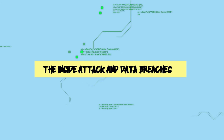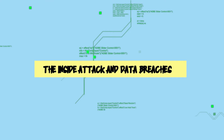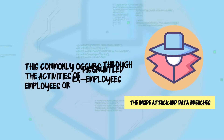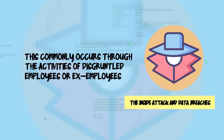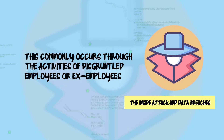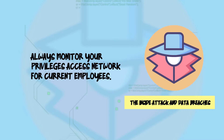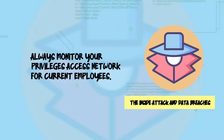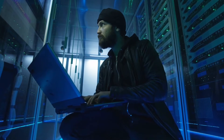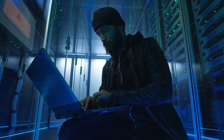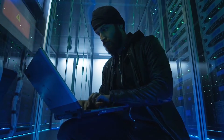Number 12: the inside attack and data breaches. This commonly occurs through the activities of disgruntled employees or ex-employees. Always monitor your privileged access network for current employees. At the same time, you should disable user access to data when you fire any employee.